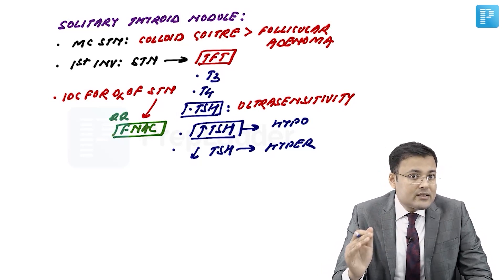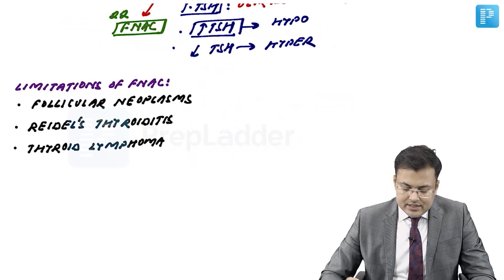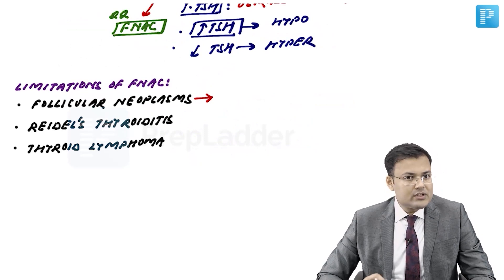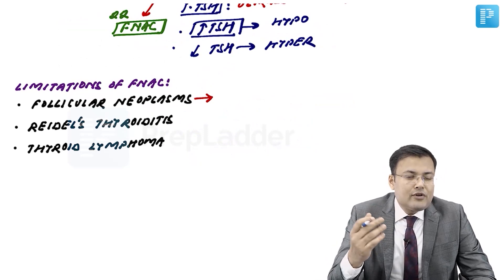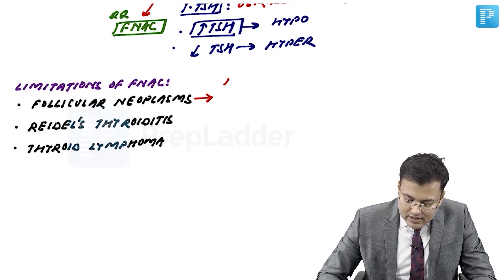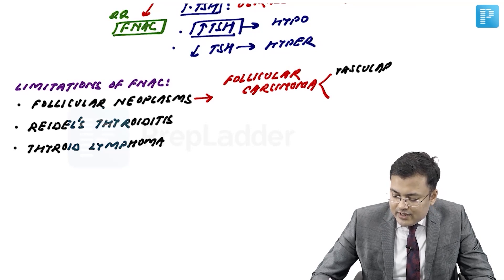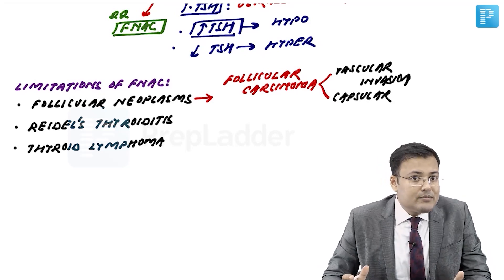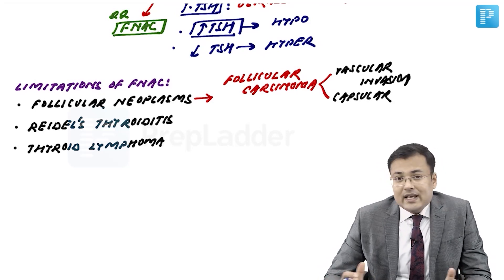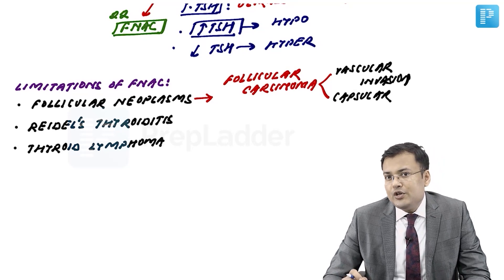There are certain limitations of FNAC in thyroid swellings. The first limitation is follicular neoplasia — FNAC cannot differentiate follicular adenoma from follicular carcinoma. This is because the diagnosis of follicular carcinoma is based on vascular invasion and capsular invasion, which are visible on biopsy, not FNAC. So we need biopsy for confirmation.